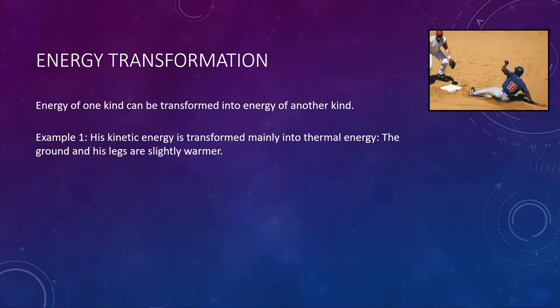These different energies can be transformed into other kinds. Energy transformations are always taking place around us. For example, a baseball player sliding to a base has kinetic energy as he moves, but as he slides against the ground there's a lot of friction, which generates thermal energy — his legs and the ground are actually getting warmer. He's losing kinetic energy as he slows down, but gaining thermal energy as he warms up. We're already hinting at a sort of conservation of energy here.